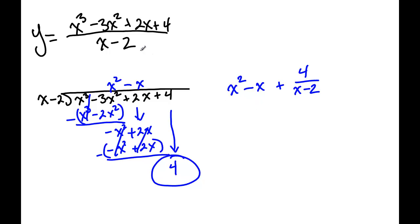So technically in our division we get this. Now here's the cool thing about slant asymptotes: because we're going to infinity, this guy becomes negligible and we ignore it. So we say y equals x squared minus x, and that is our slant asymptote.